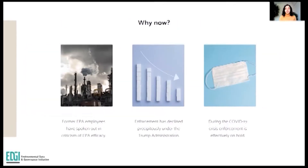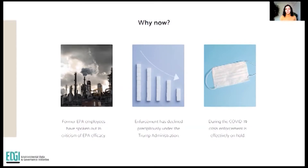Why now? Violations of federal environmental law are chronic and routine. Former United States Environmental Protection Agency officials themselves have spoken out in criticism of EPA efficacy, and enforcement has declined precipitously under the Trump administration. Until very recently, just the beginning of September, enforcement was effectively on hold due to COVID-19. However, data about environmental enforcement is legally available to anyone. The United States Community Right to Know Act allows us to see all of the violations, enforcement, and compliance data for our nation. This data can be used to inform our activism.